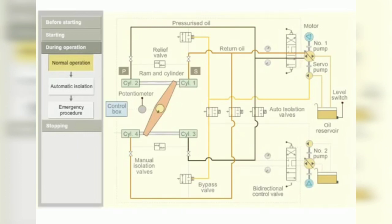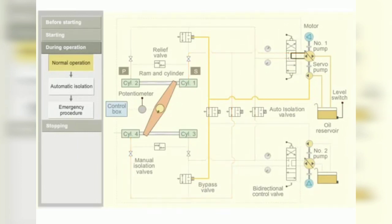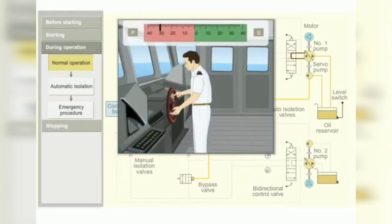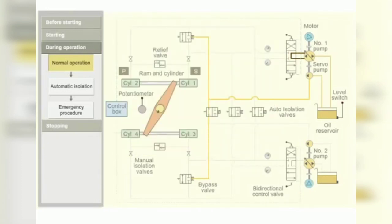This blocks the oil flow and stops the movement of the ram. When starboard order is given from the bridge, the control box sends a signal to bidirectional control valve. The valve moves aft side.